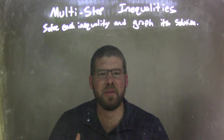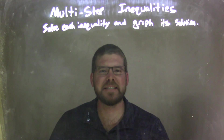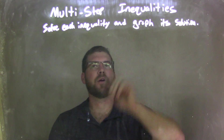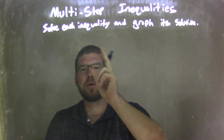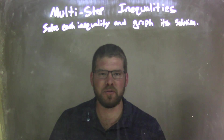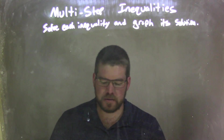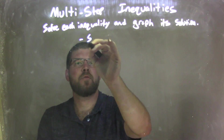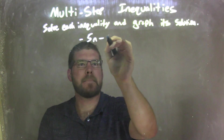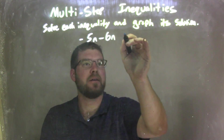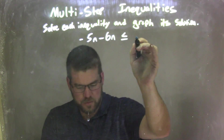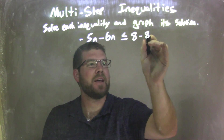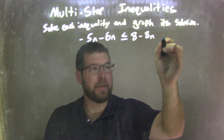Hi, I'm Sean Gannett and this is MinuteMath. Today we're going to learn about multi-step inequalities and we're going to solve each inequality and graph its solution. So if I was given this inequality: negative 5n minus 6n is less than or equal to 8 minus 8n minus n.